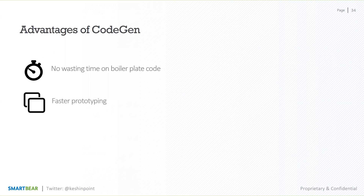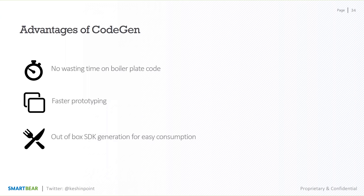Faster prototyping — get to your value as soon as possible. And finally, out-of-the-box SDK generation for easy consumption. You can ensure that you have SDKs right out of the box which your end consumers can then use to start consuming that API, integrating it into their own applications — essentially making for a great developer experience as well. The tool that supports this is the Swagger CodeGen project, which you can find on Swagger.io.